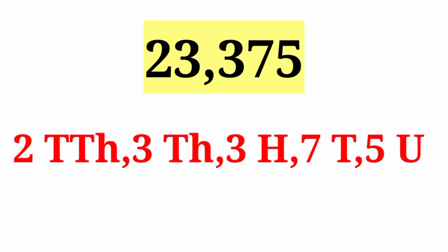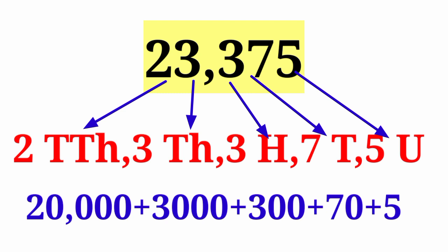Now, write the expanded form of the 5-digit number 23,375. The expanded form is 20,000 plus 3,000 plus 300 plus 70 plus 5.